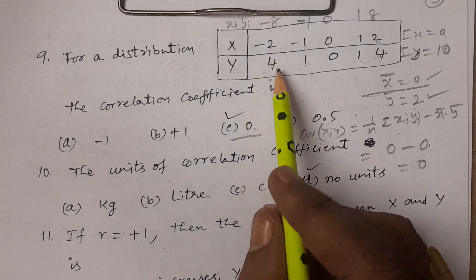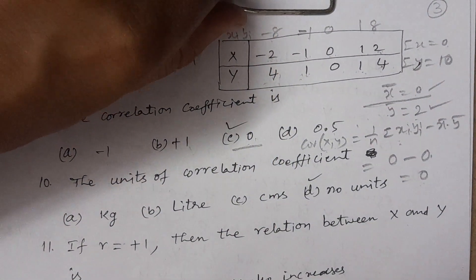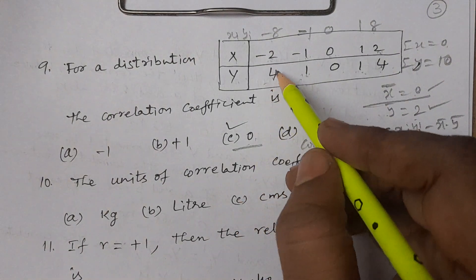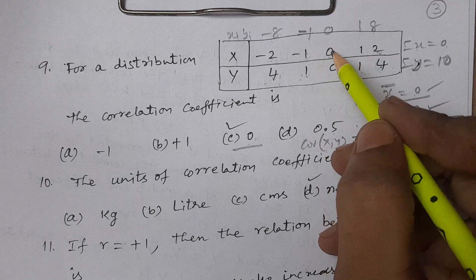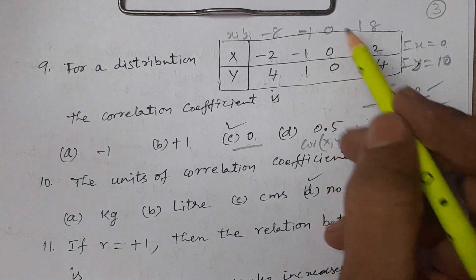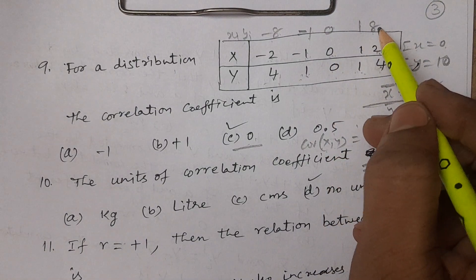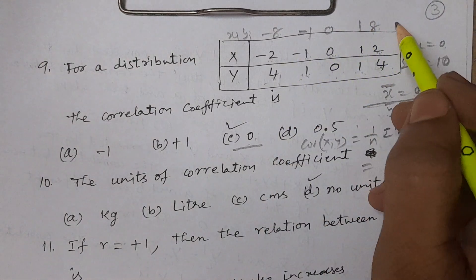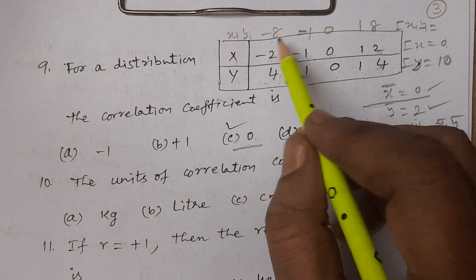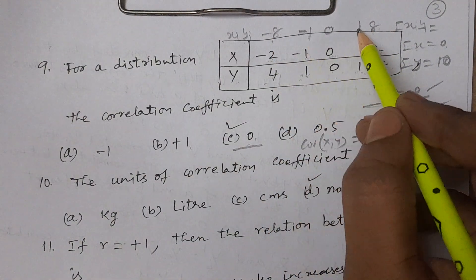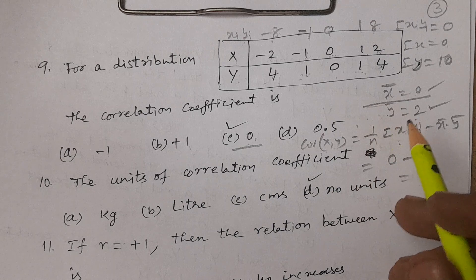Next, summation xi yi: minus two into four is minus eight, minus one into one is minus one, zero into zero is zero, one into one is one, two into four is eight. Adding these: minus eight minus one plus zero plus one plus eight equals zero. Summation xi yi is zero.